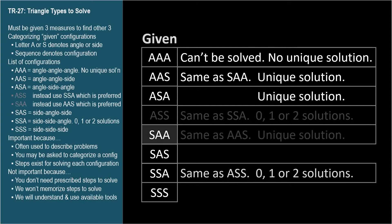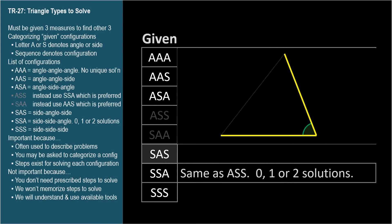SAS is side, angle, side. We're given two sides and the angle between them. Unique solution, easy to solve.